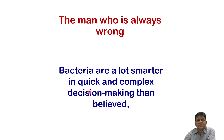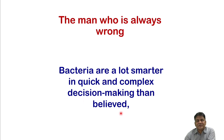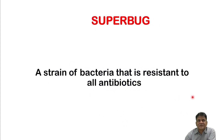Humans think they are very intelligent, but bacteria are a lot smarter in quick and complex decision-making than believed, because they multiply very fast. The definition of a superbug is a strain of bacteria that is resistant to all antibiotics.